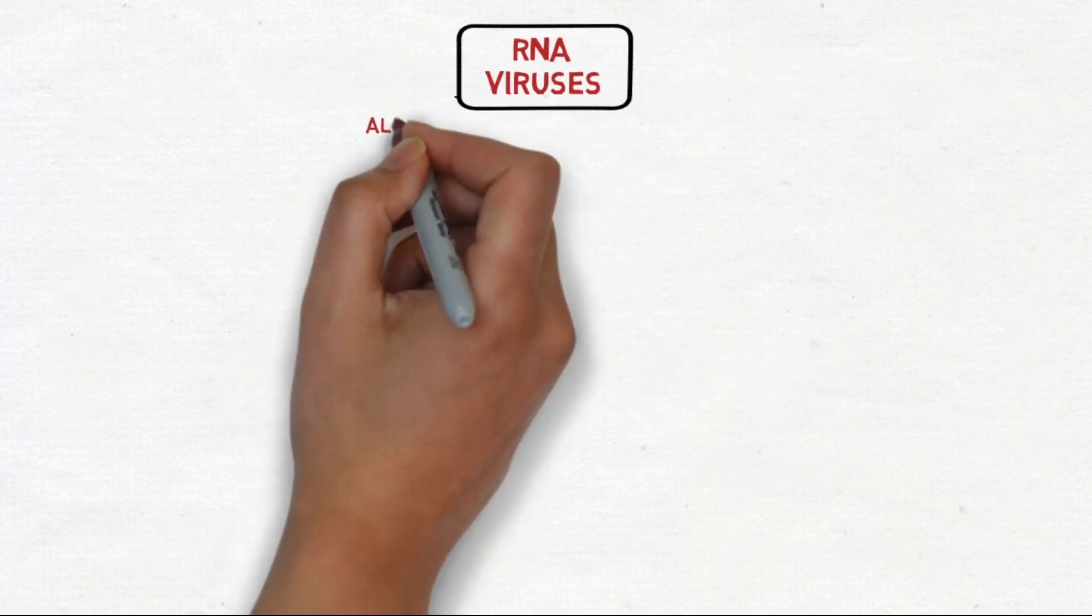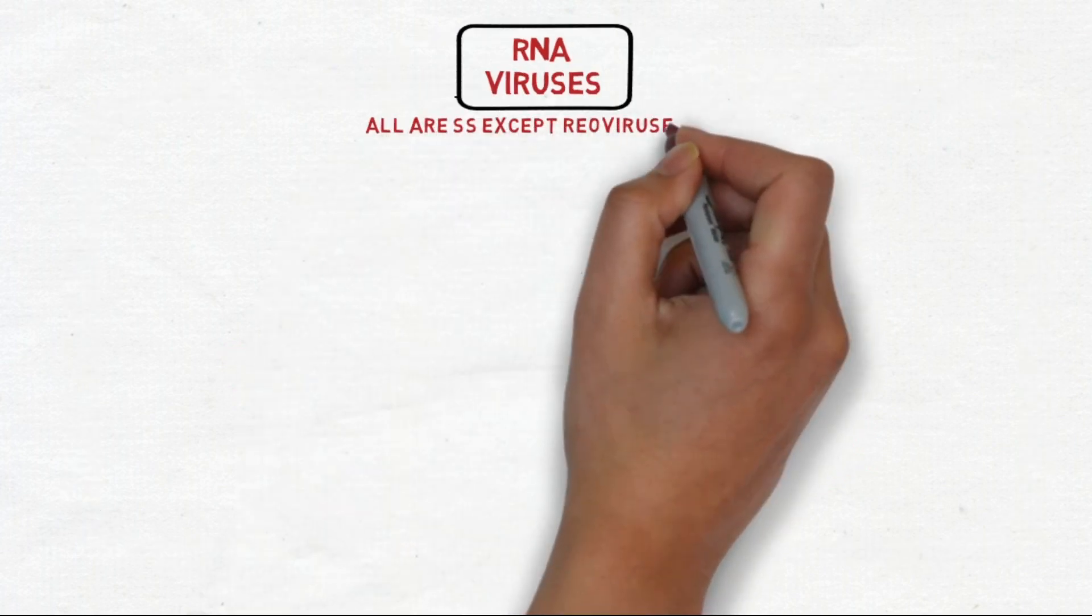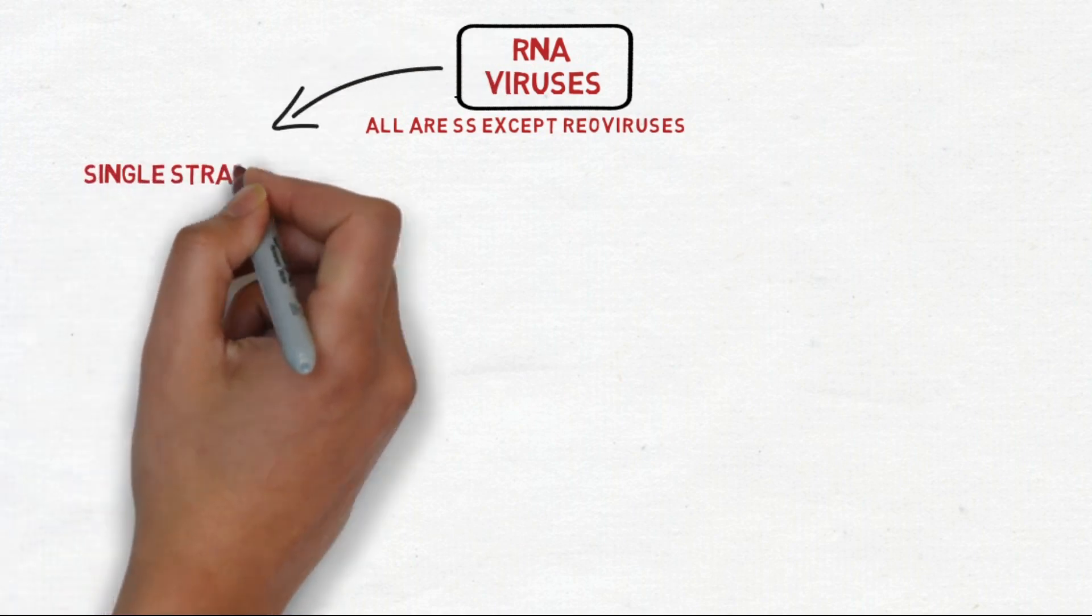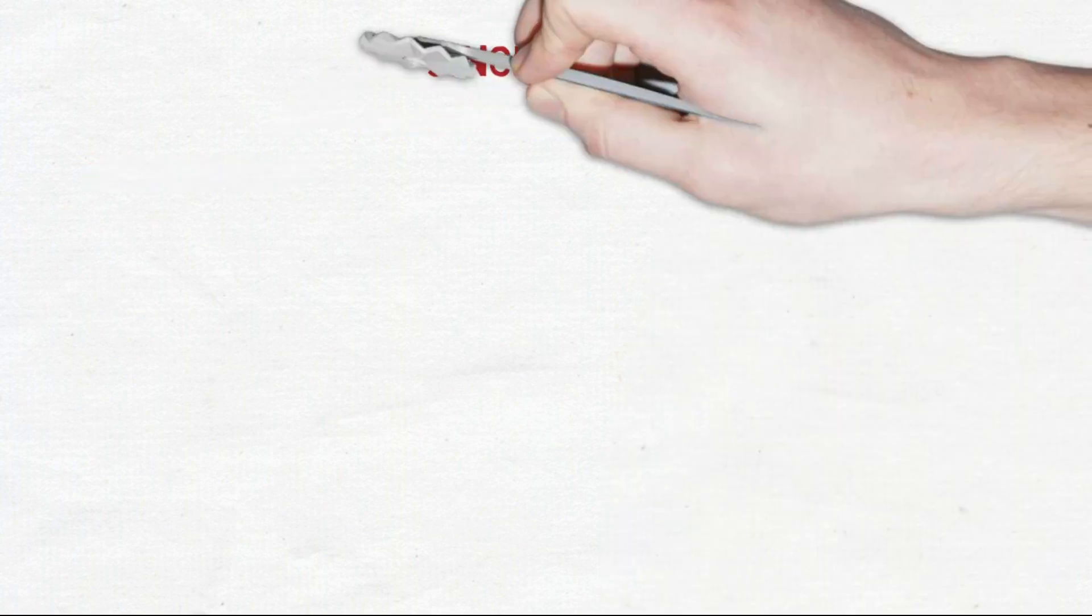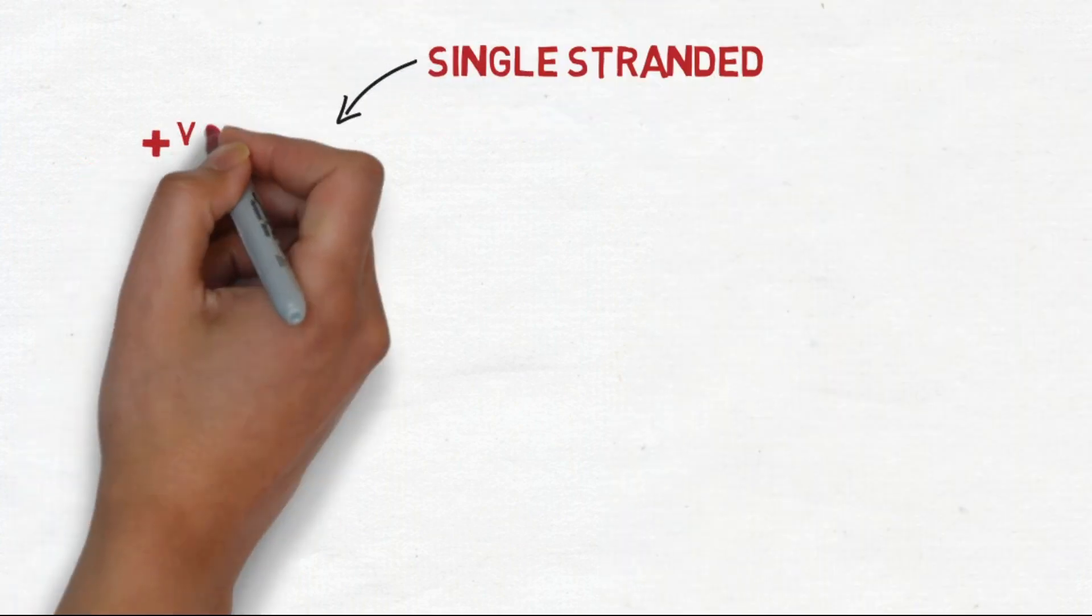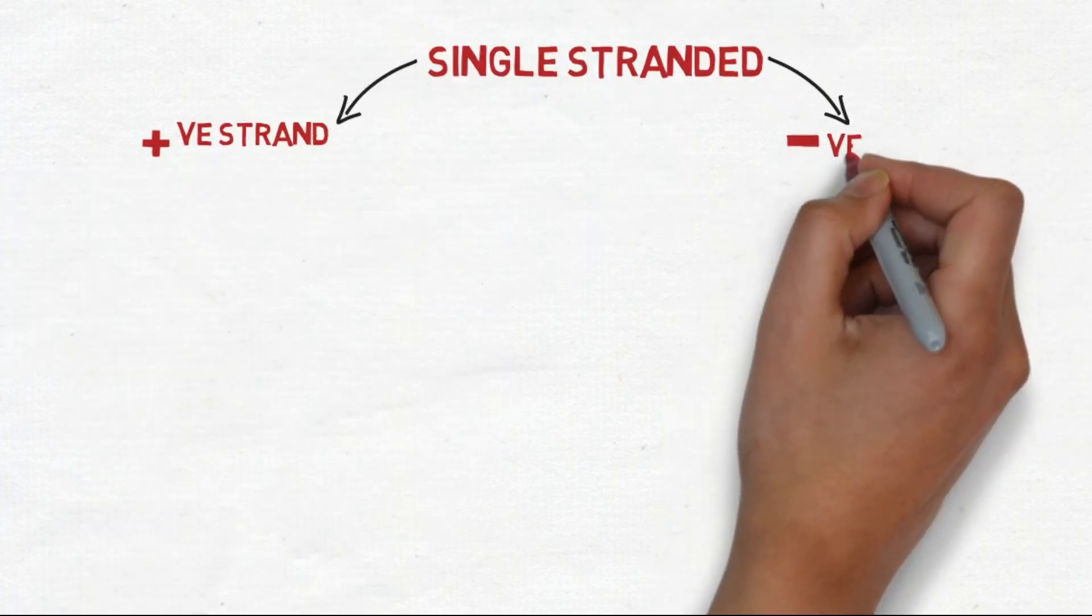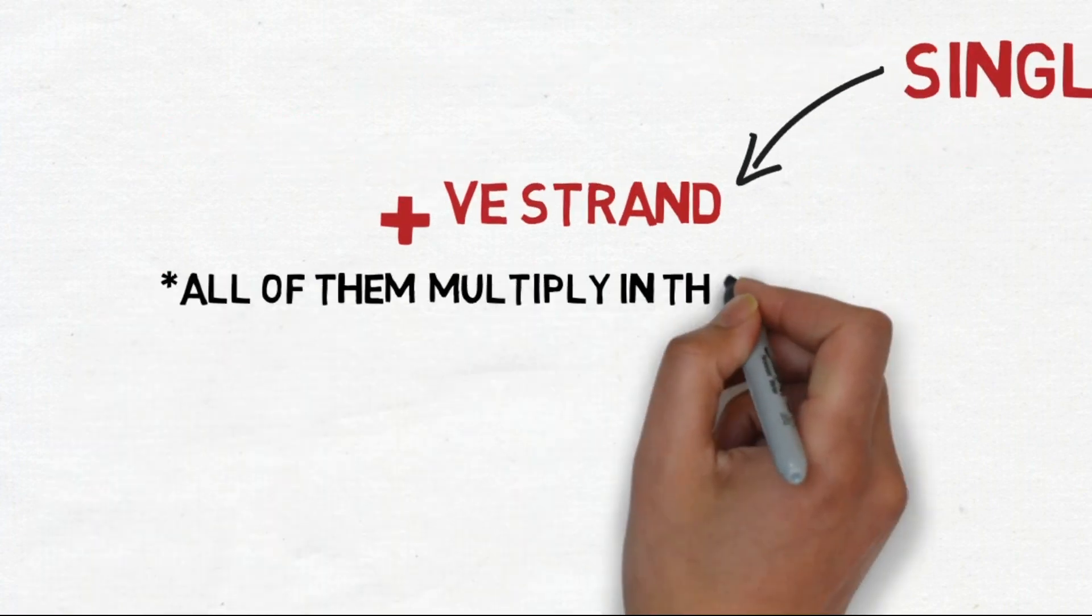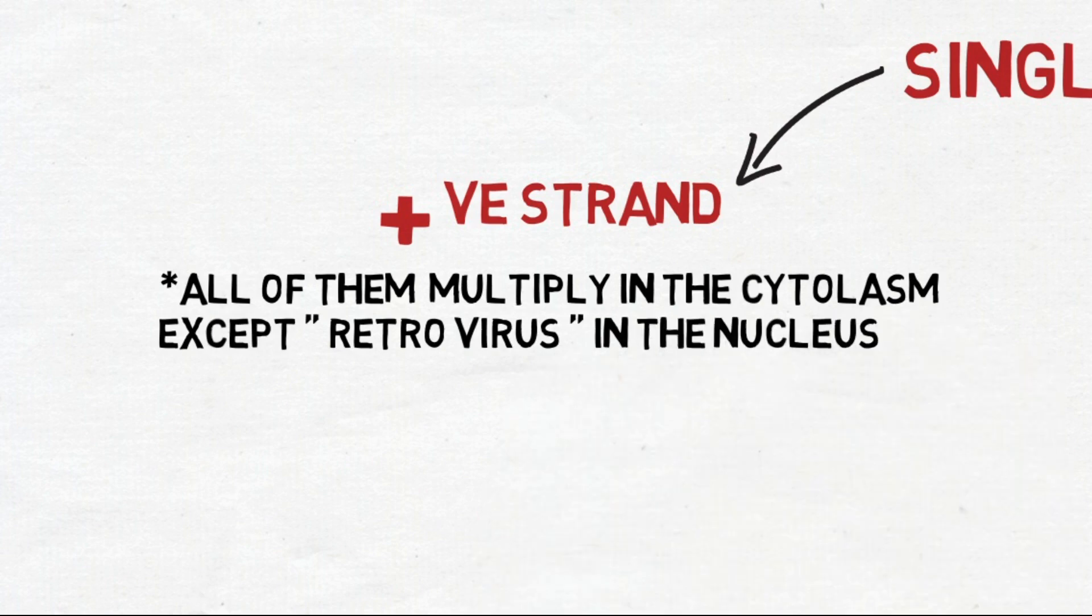The very first thing you should know about RNA viruses is that they are all single-stranded except Rio viruses. The double-stranded viruses consist of a positive strand and a negative strand together, unlike the single-stranded viruses which are either made of positive strand or negative strand, not both. All the positive single-stranded RNA viruses replicate in the cytoplasm, except retroviruses that replicate in the nucleus.